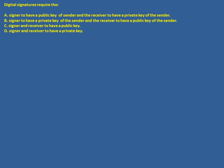Please remember: a digital signature requires the sender's private key for encryption and the sender's public key for decryption. Both keys are required. The private key is required for encryption and the public key for decryption. So the answer is: the signer must have the sender's private key, and the receiver must have the sender's public key.